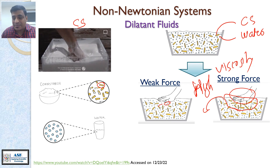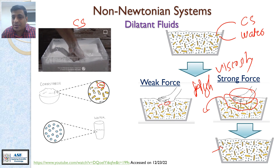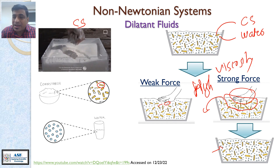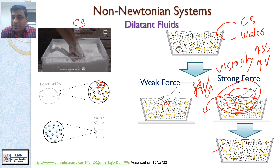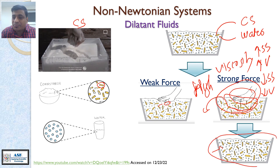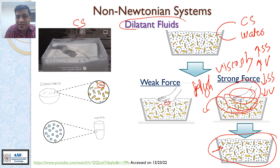The moment you release the force, the water molecules find their way back between the corn starch molecules. Things are getting opposite compared to other liquids — when you increase shear stress, viscosity increases, which is a localized increase in viscosity. When you decrease shear stress, viscosity decreases because the water molecules find their ways between the corn starch molecules again. That is why these fluids are called dilatant fluids.